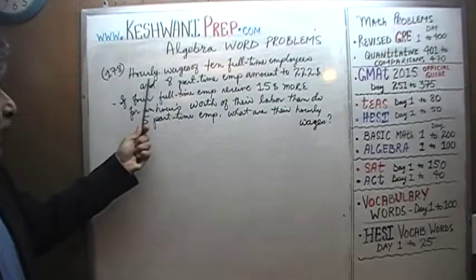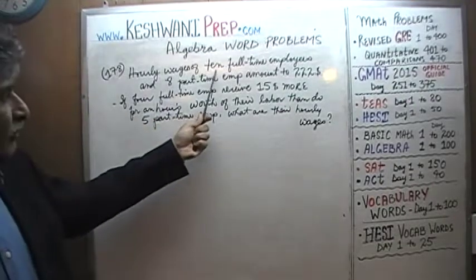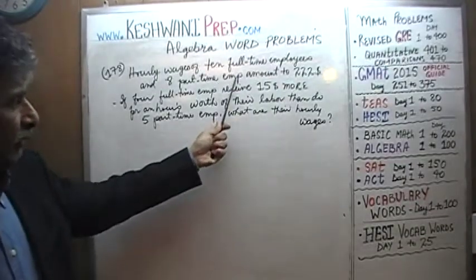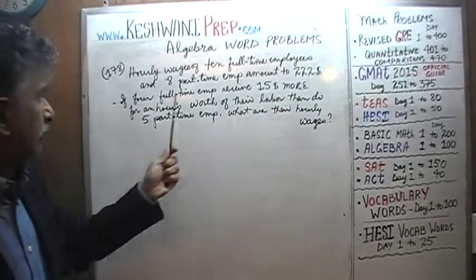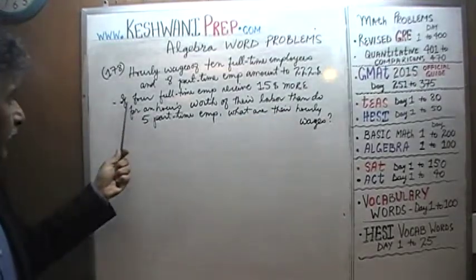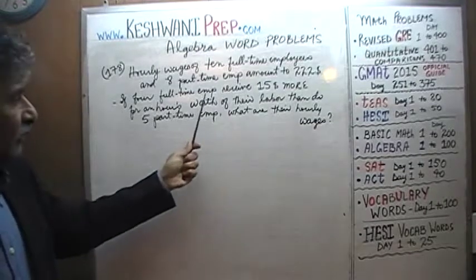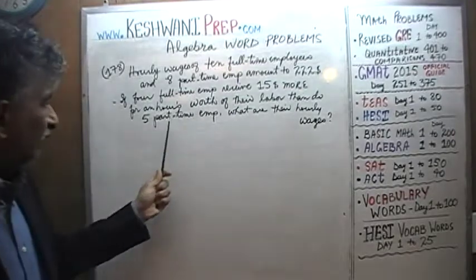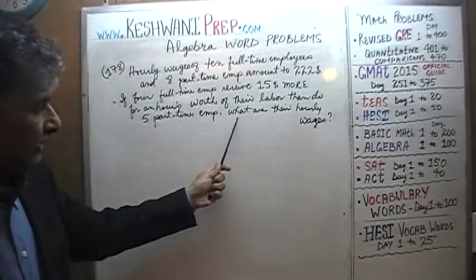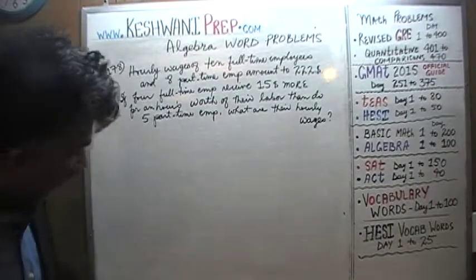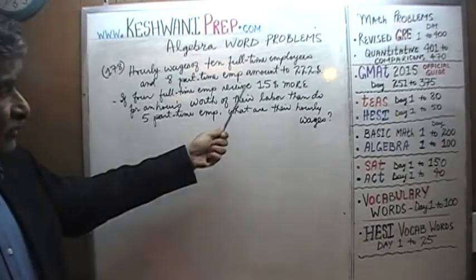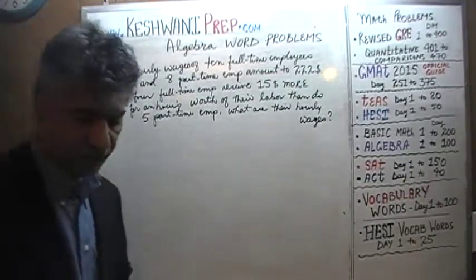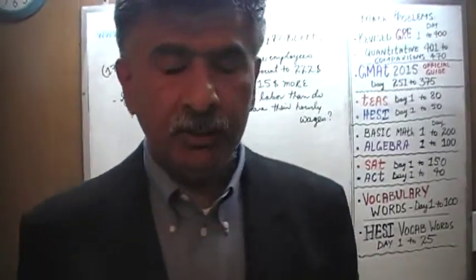We are told that the hourly wages of ten full-time employees and eight part-time employees amount to $222. We are further told that four full-time employees receive $15 more for an hour's worth of their labor than do five part-time employees. The question is: what are their hourly wages?